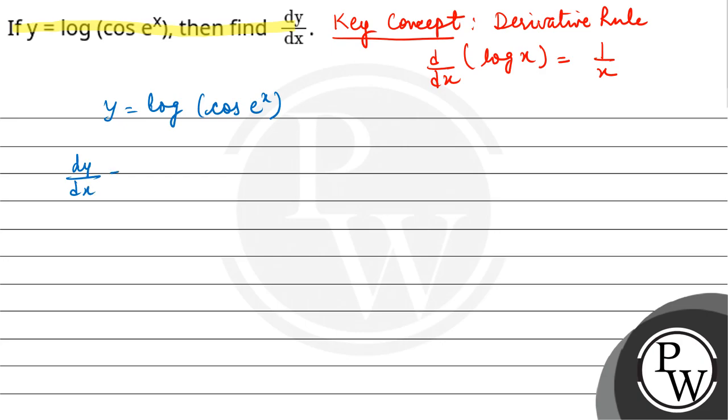So dy by dx will be differentiation of log cos exponential x, that is 1 upon cos exponential x.